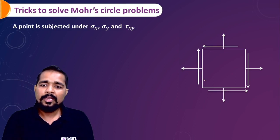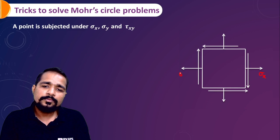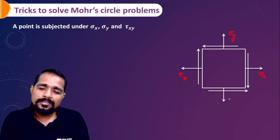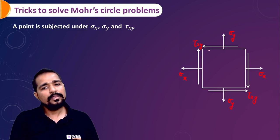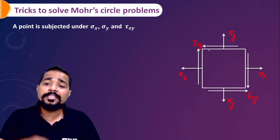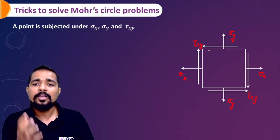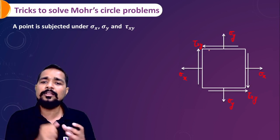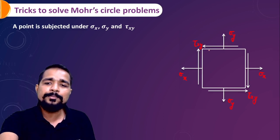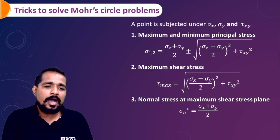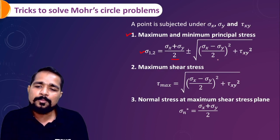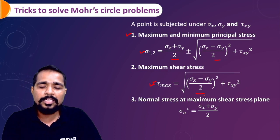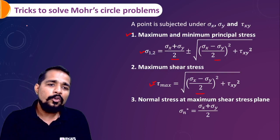If a point is subjected to σ_x, σ_y, and τ_xy — a problem we have solved many times — and we want to calculate the normal stress, shear stress, maximum normal stress, principal stress, or maximum shear stress, then the maximum and minimum principal stresses can be written as (σ_x + σ_y)/2 ± √[((σ_x − σ_y)/2)² + τ_xy²], and the maximum shear stress is √[((σ_x − σ_y)/2)² + τ_xy²].